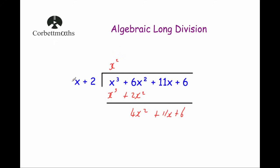Now we divide again — dividing the 4x squared by the first term of the divisor, x. You're always dividing by this x. So 4x squared divided by x is 4x, and we write plus 4x above. Then we multiply both terms of the divisor by 4x: 4x times x is 4x squared, and 4x times 2 is 8x, so plus 8x.